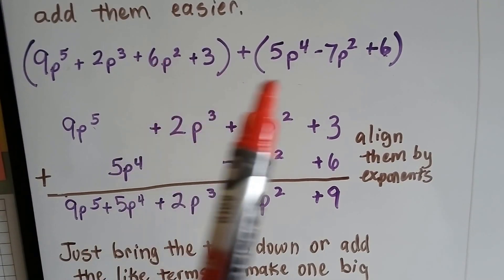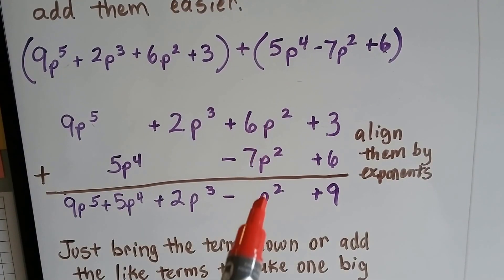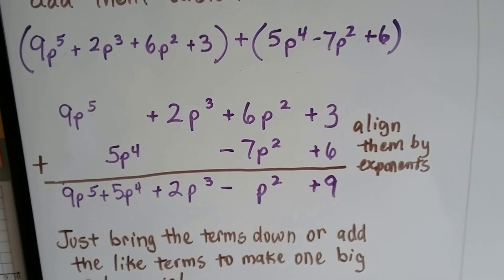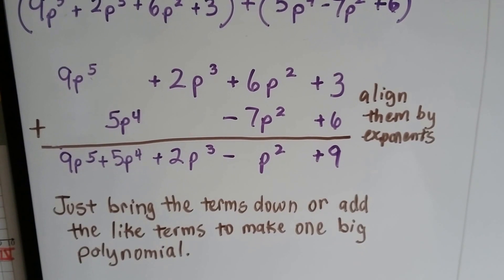Then they both have a p to the second power, don't they? Those we can stack, and they both have a constant at the end, don't they? So we can stack those. So we align them by exponents.